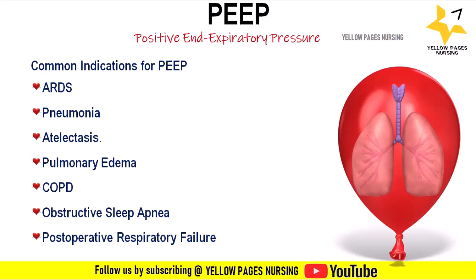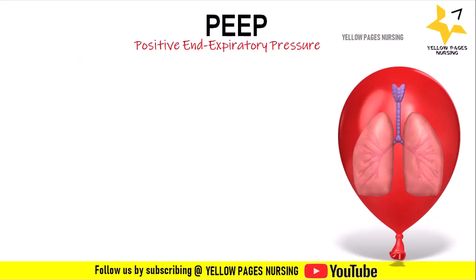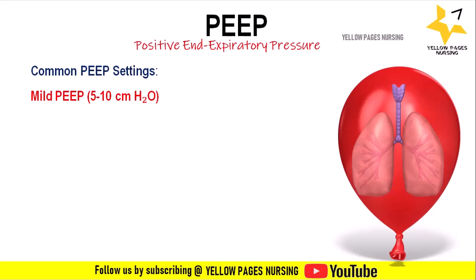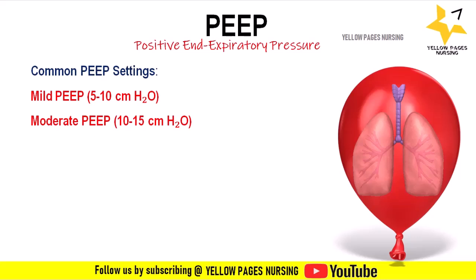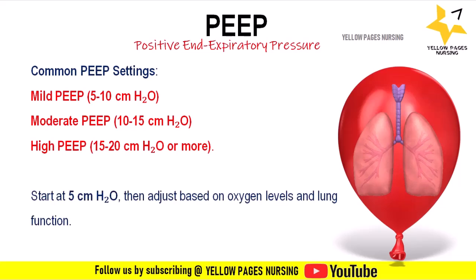There are three PEEP setting categories. Mild PEEP (5–10 cmH₂O) is used for minor lung issues or routine support. Moderate PEEP (10–15 cmH₂O) is used for conditions like pneumonia or mild ARDS to improve oxygenation. High PEEP (15–20 cmH₂O or more) is used for severe conditions like ARDS to keep alveoli open, though there is a risk of lung injury. Settings typically start at 5 cmH₂O and are adjusted based on oxygen levels and lung function.